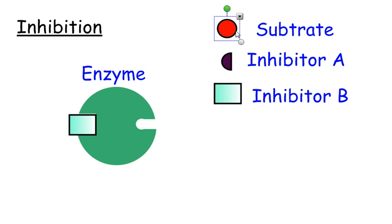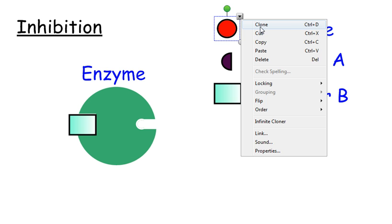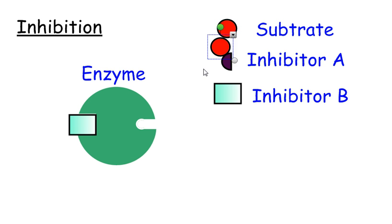So the active site has now changed and the substrate won't be bound anymore. The substrate can't fit into the active site anymore because the binding of the inhibitor has changed the shape of the active site.